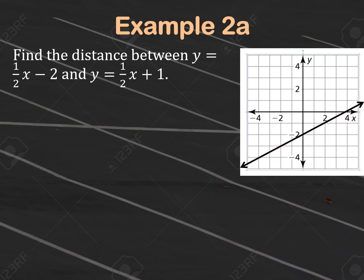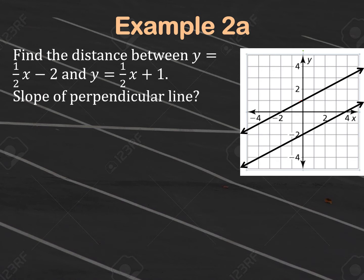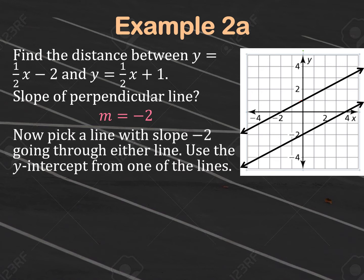Do the same thing with the second line: y = 1/2 x + 1 has a y-intercept at (0, 1). Go up 1, right 2 for another point, and graph the second line. Both lines have slope 1/2. The slope of a line perpendicular to both is found by flipping the fraction and changing the sign: 1/2 becomes negative 2/1, so the slope of the perpendicular line is negative 2.